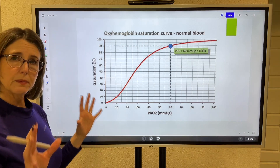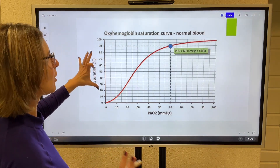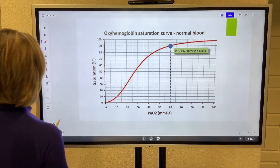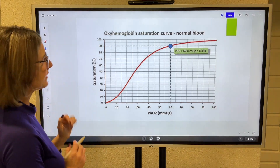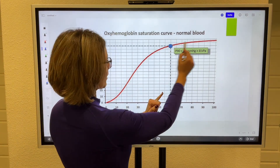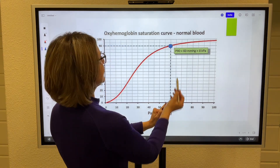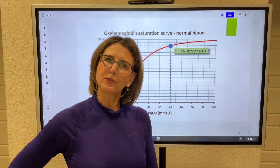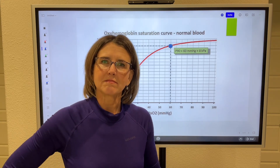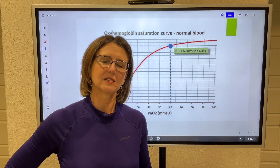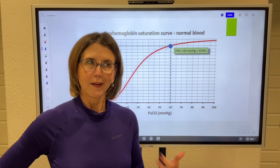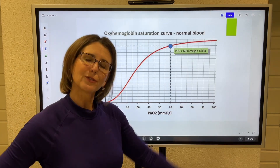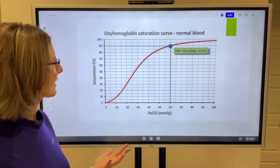Here's a slightly more detailed version of the same curve with gridlines. The point where it flattens off — a PaO2 of 60 — gives us a saturation of about 90%. When you check somebody's saturation and your hospital policy says saturations greater than 90% are okay, that's because as long as the sats are 90%, we know the PaO2 is greater than 60. That's where that clinical rule comes from — this relationship.